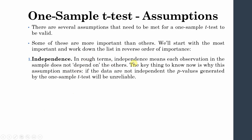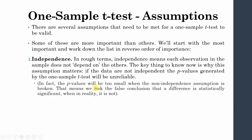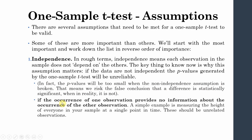The first and most important assumption is independence. In rough terms, independence means that each observation in the sample does not depend on any other. If the data are not independent, the p-values generated by the one-sample t-test will be unreliable — specifically, they will be too small, risking the false conclusion that a difference is statistically significant when in reality it is not.